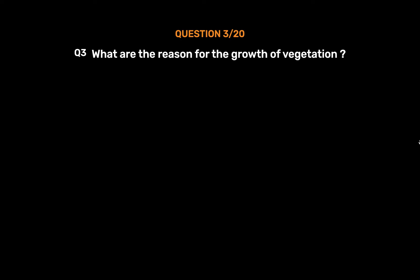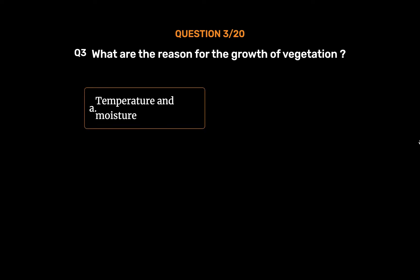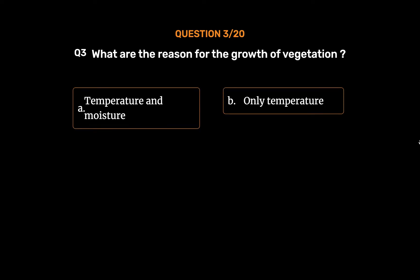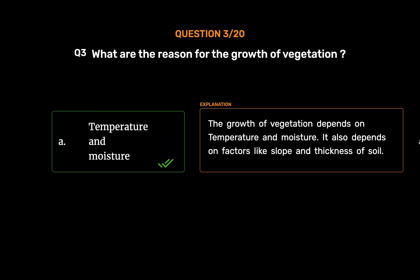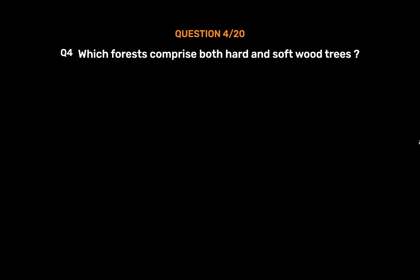Question number 3: What are the reasons for the growth of vegetation? Option A: Temperature and moisture. Option B: Only temperature. Option C: Only moisture. Option D: Dry climate. The correct answer is Option A: Temperature and moisture. The growth of vegetation depends on temperature and moisture. It also depends on factors like slope and thickness of soil.